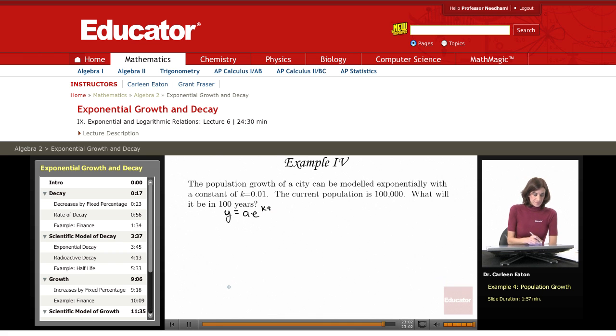I have been given a k. This is 0.01. And I've been given the original population, which is 100,000. I've been given a t of 100 years.